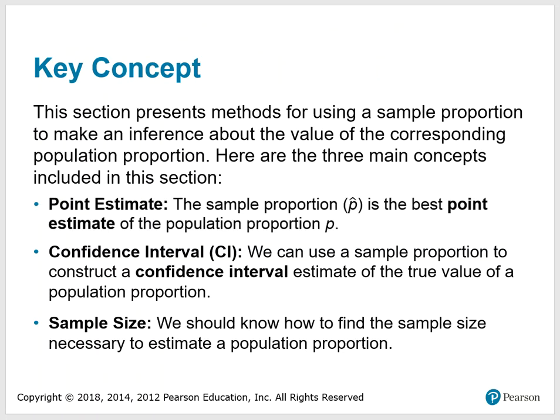The key concepts in this section: This section presents methods for using a sample proportion to make an inference about the value of the corresponding population proportion. There are three main concepts: Point Estimate — the sample proportion P-hat is the best point estimate of the population proportion P. The Confidence Interval (CI) — we can use a sample proportion to construct a confidence interval estimate of the true value of a population proportion. Sample Size — we should know how to find the sample size necessary to estimate a population proportion. Basically, we're using sample statistics to make an inference about the population.